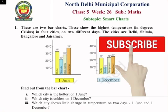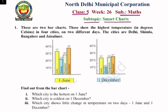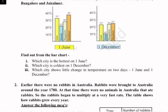Hello students, today in Class 5 our subject is Math and the subtopic is Smart Chart. Let's start question number one. These are two bar charts showing the highest temperature in degrees Celsius in four cities on two different days. The cities are Delhi, Shimla, Bangalore, and Jaisalmer. Find out from the bar chart which city is the hottest on 1st June.